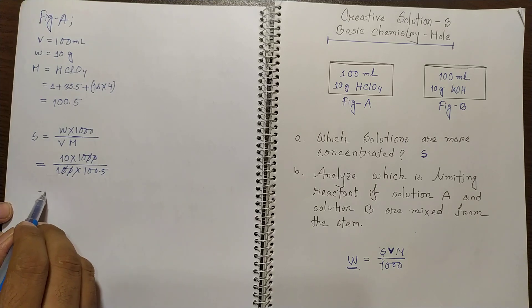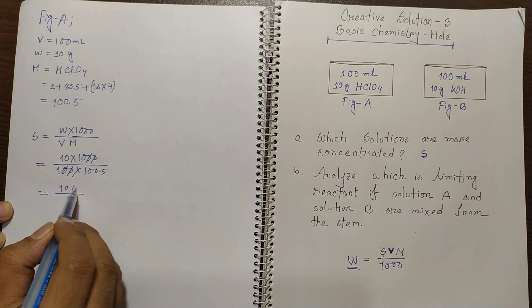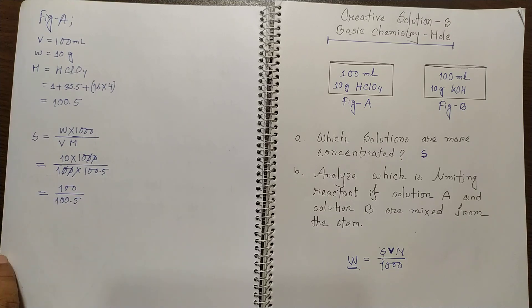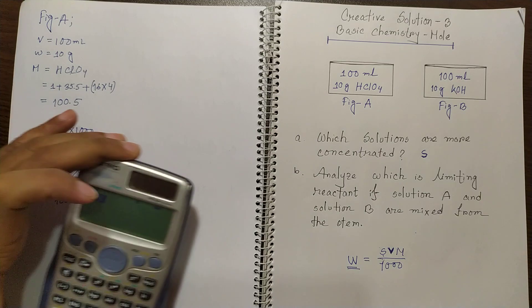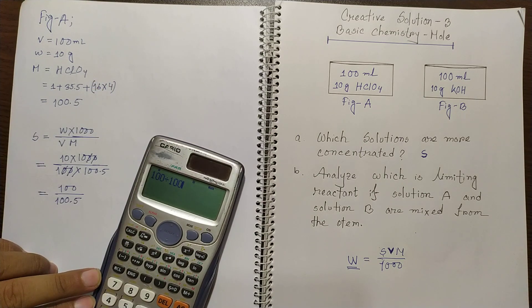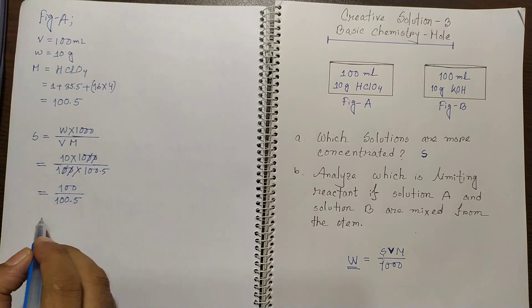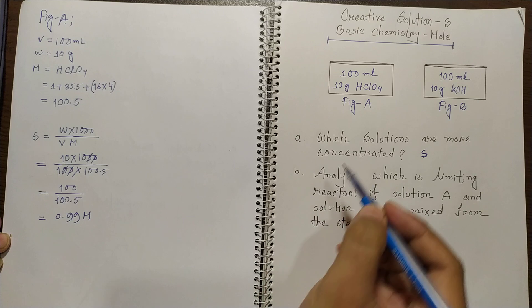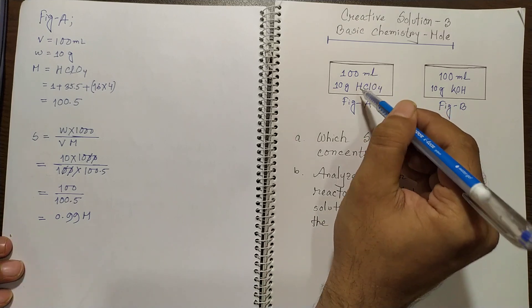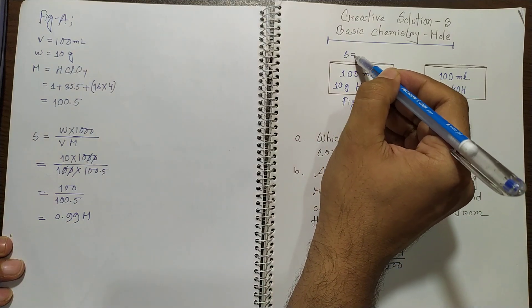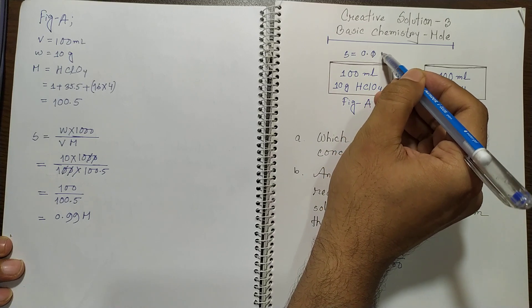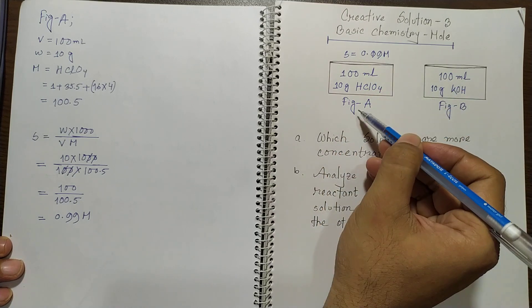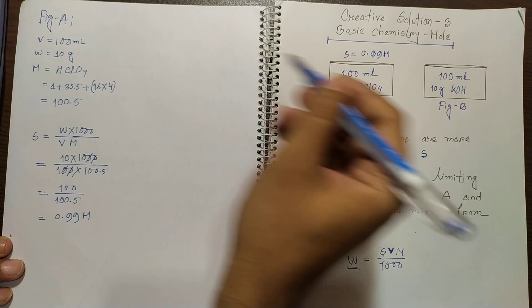So 100 over 100.5. It would be less than 1. So it would be 100 divided by 100.5 which is 0.99 mol. So 0.99 mol is the concentration of this figure A. So the molarity is 0.99 molar of figure A. Now you think in figure B.